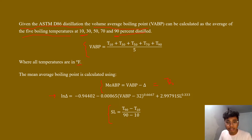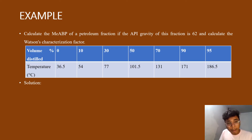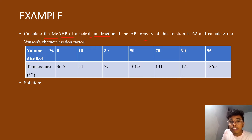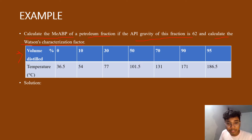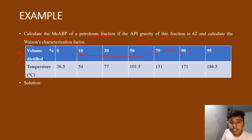Now we will understand this with the help of an example. We have to calculate the mean average boiling point of a petroleum fraction if the API gravity of the fraction is 62, and then calculate the Watson characterization factor. In the data table, the volume percent distilled values are 0, 10, 30, 50, 70, 90, and 95. As established earlier, only the values at 10, 30, 50, 70, and 90 percent are needed, so we will be dealing with those values only.